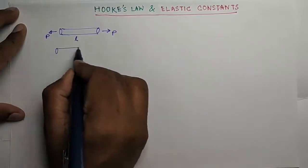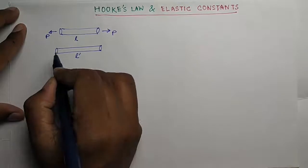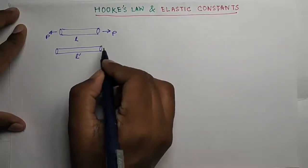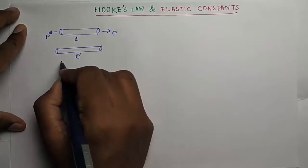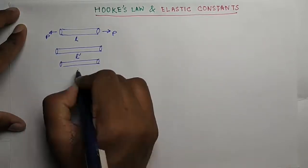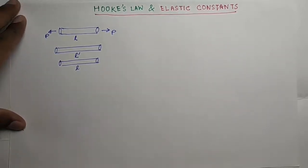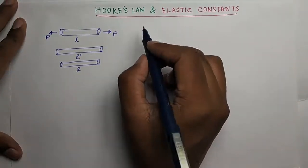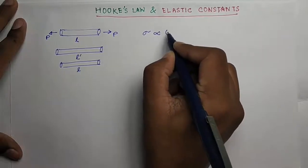If you stretch the bar and as a result the bar gets another length L dash, and the bar is within elastic limit, and now you release the force P, the bar will again come to length L. So this is called elastic limit. Hooke's law states that within elastic limit, the stress is proportional to strain.